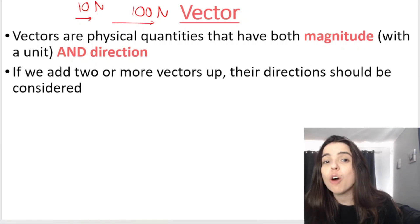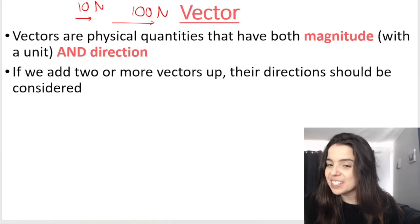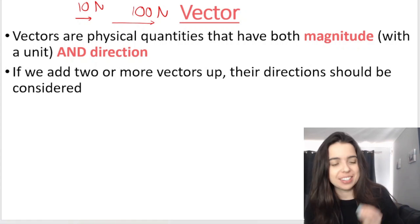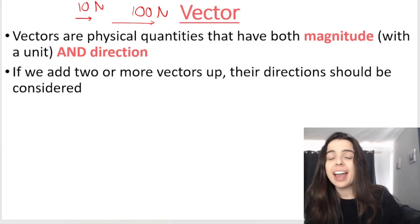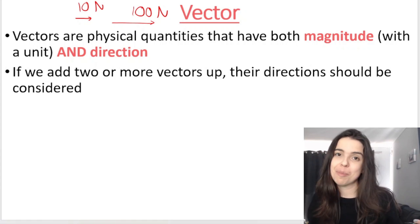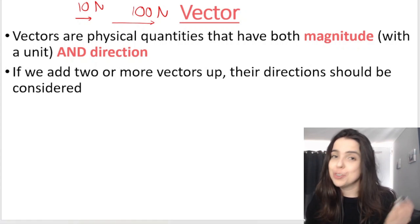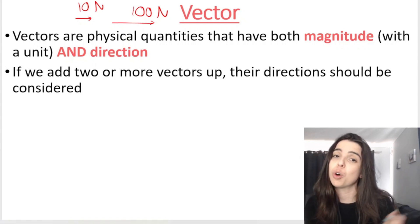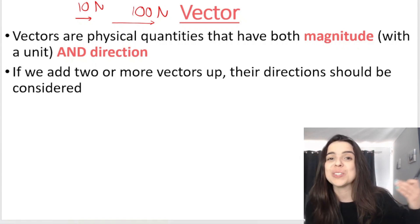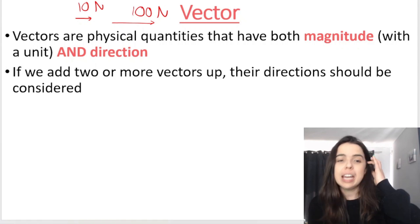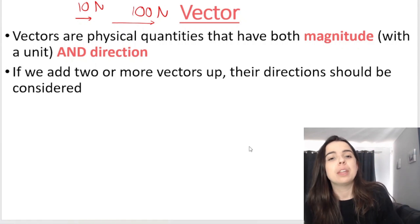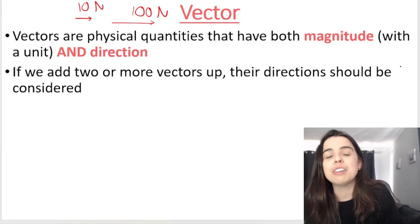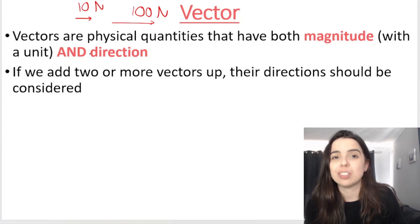Vectors are physical quantities that have both magnitude and direction. Direction is very, very important. If you're dealing with a vector and you don't include the direction as part of your answer, you'll get your answer wrong. And added on to that, if you are adding vectors, their directions need to be considered.